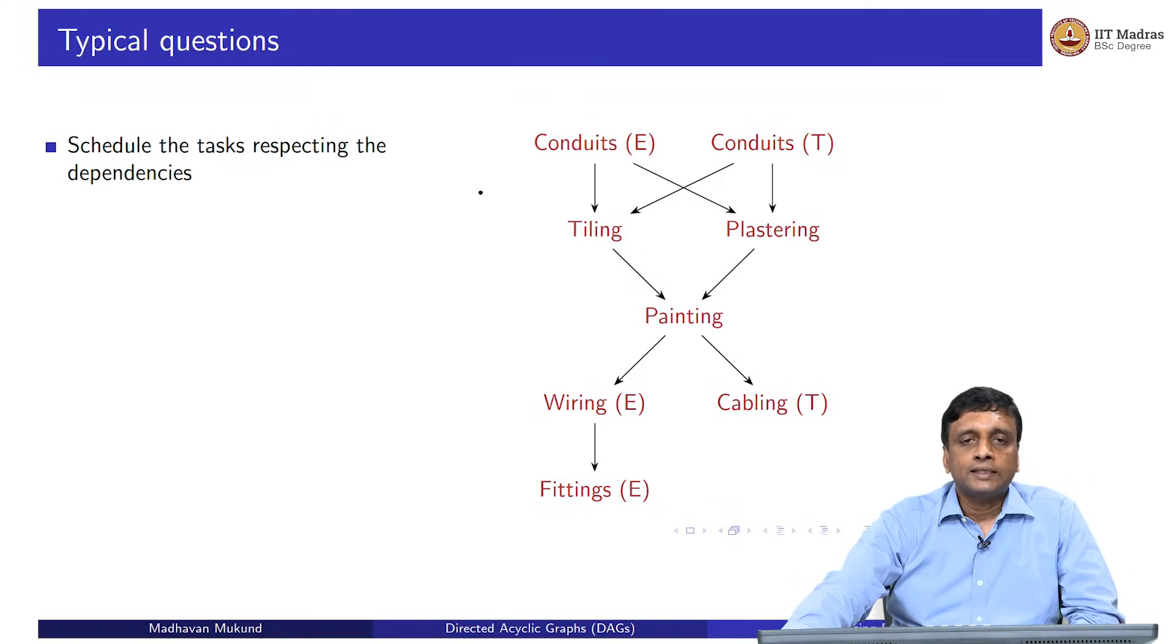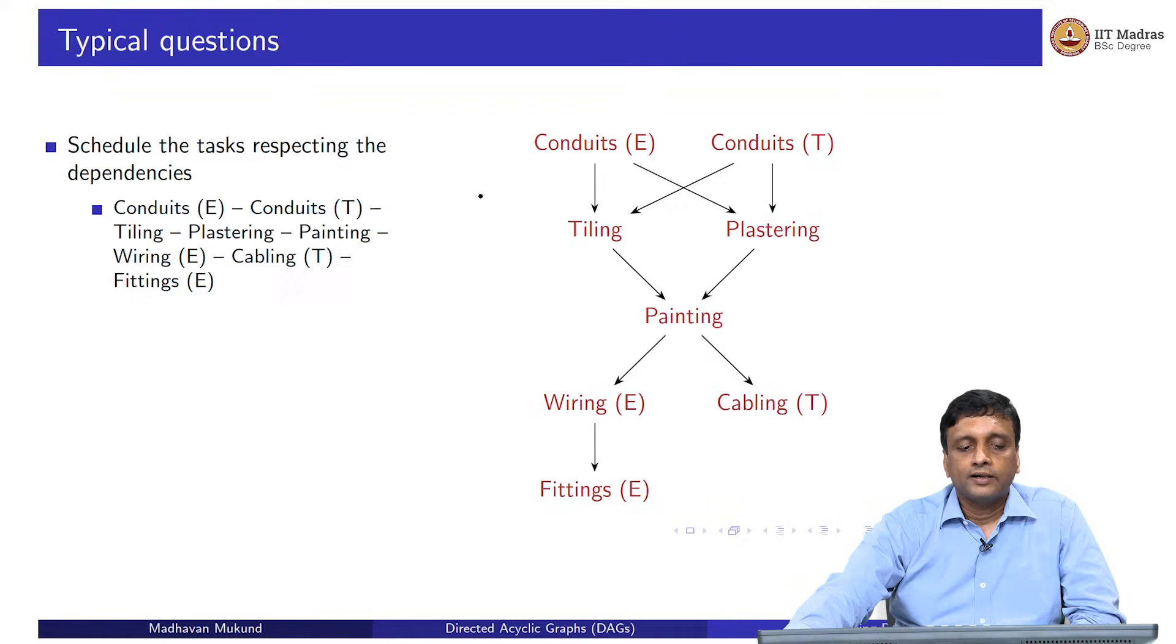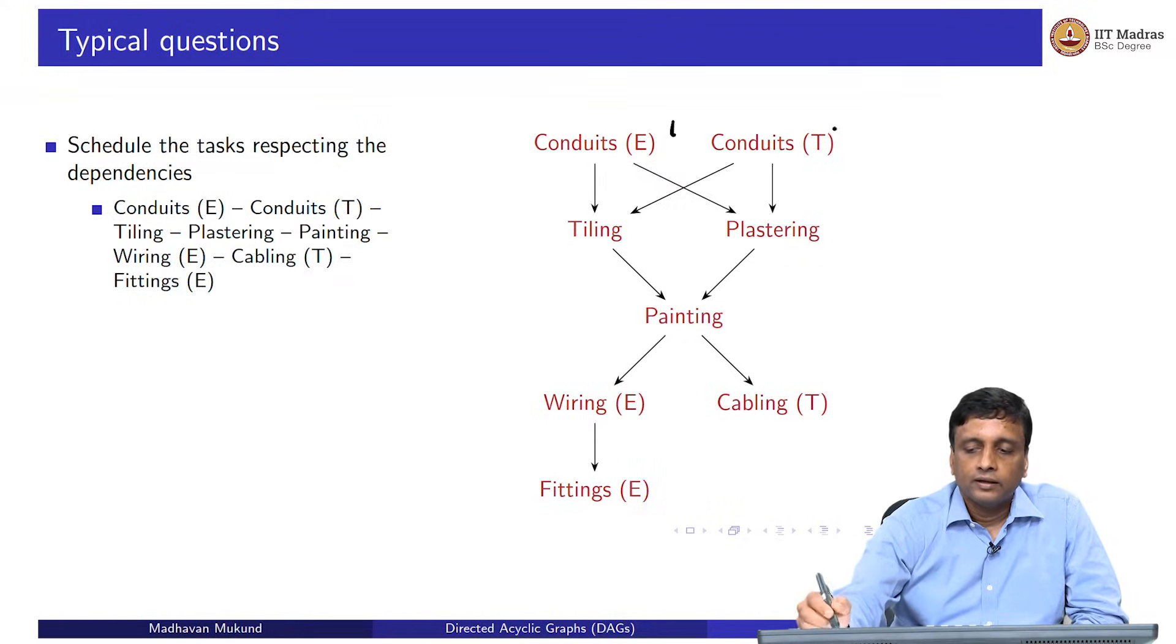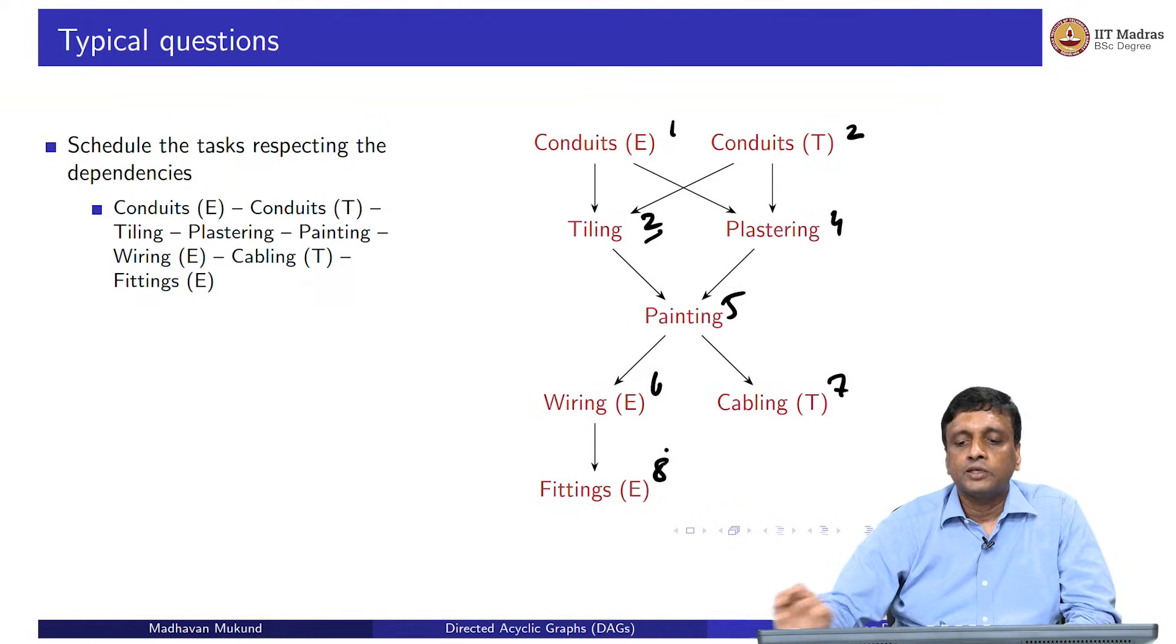We want to schedule these tasks so that these dependencies are respected and there may be many ways to do it. We can just do it like this: we can take the conduits first. And then we can do the tiling and the plastering. Then we can do the painting. And then we can do the wiring and the cabling and then the fittings. This would be one sequence in which you could do it.